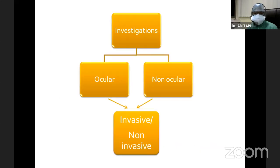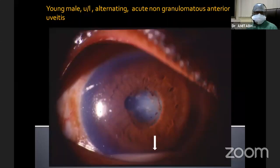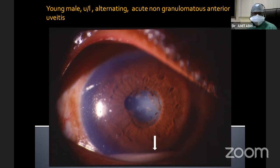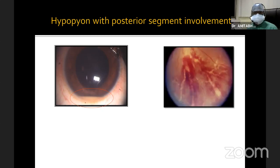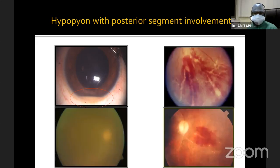Investigations in anterior uveitis could be ocular or non-ocular, invasive or non-invasive. So this young male with a unilateral acute non-granulomatous anterior uveitis alternating between the two eyes with a hypopion — I think the only test we would need to order first is HLA-B27. On the other hand, if another hypopion case shows anterior uveitis as an indicator of something ominous in the back of the eye, then after detailed examination, if there is posterior segment involvement, we would want to rule out Behçet's disease and order HLA-B51.